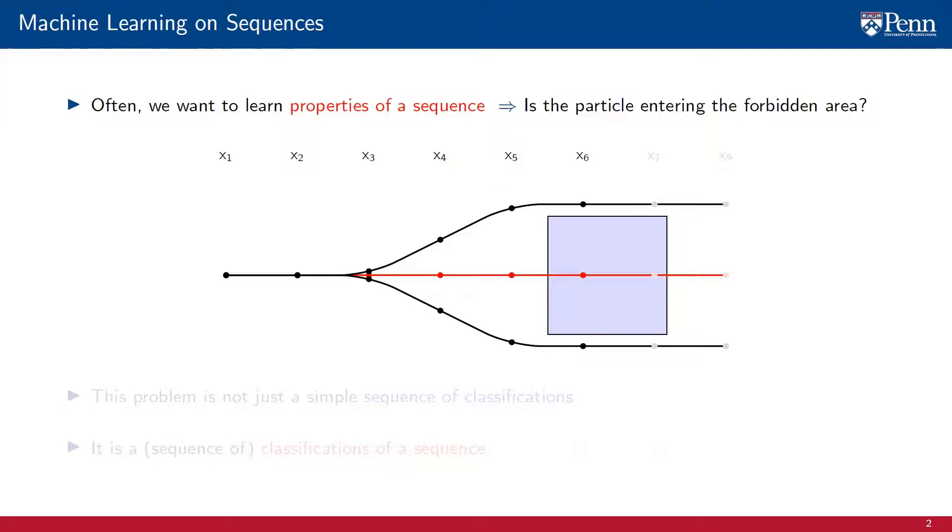At time 6, we are certain that the red trajectory is at fault while the other two seem safe. At time 7, the two black trajectories up and down seem to be pulling away, something that we can ascertain with confidence at time 8.